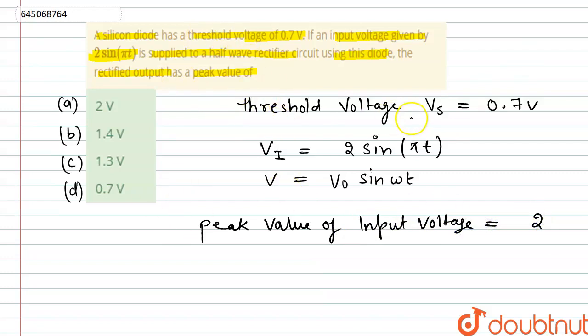Now it's given that the threshold voltage is 0.7 of silicon diode. So we have to find the rectified output voltage. The rectified output peak voltage is peak voltage of input minus threshold voltage of silicon diode.